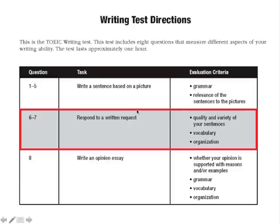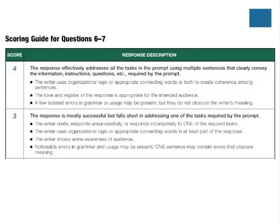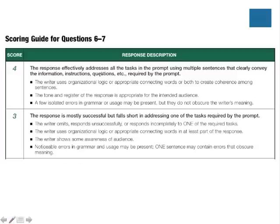Looking at the evaluation criteria, you will notice it contains some elements from the previous task, but as we discussed in the first video, they're most likely going to have a specific set of criteria for each question. On this part of the test, looking at the scoring guide, you'll notice that the maximum score is a four, not a three. We're also looking at the idea that we need to provide some sort of organizational logic — a keyword we'll explore more in today's video.